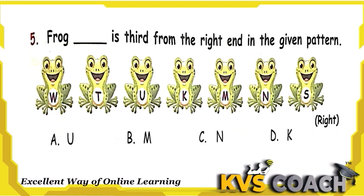The next question: Frog __ is the 3rd from the right end in the given pattern. Here is the right end. Counting from right: 1st, 2nd, 3rd. Frog M is 3rd from the right.